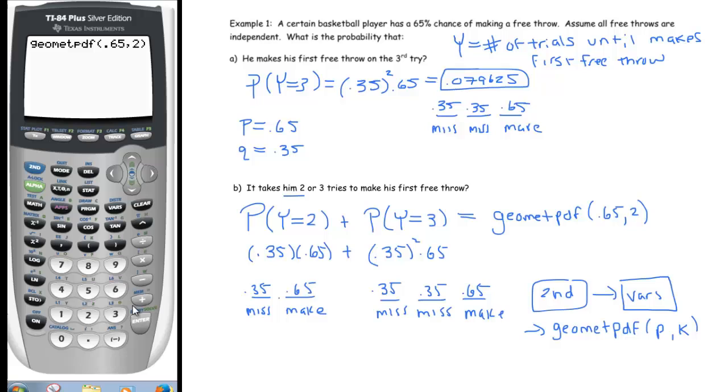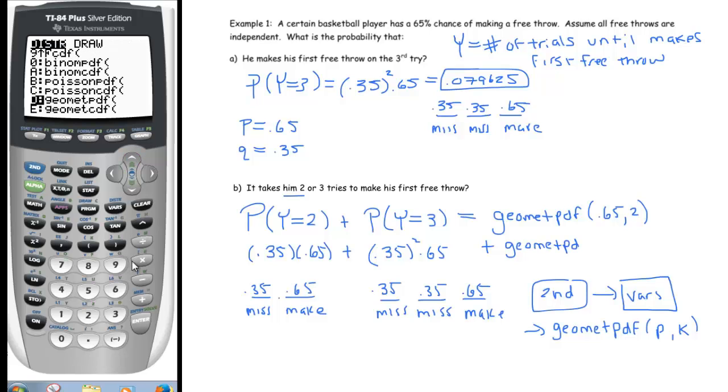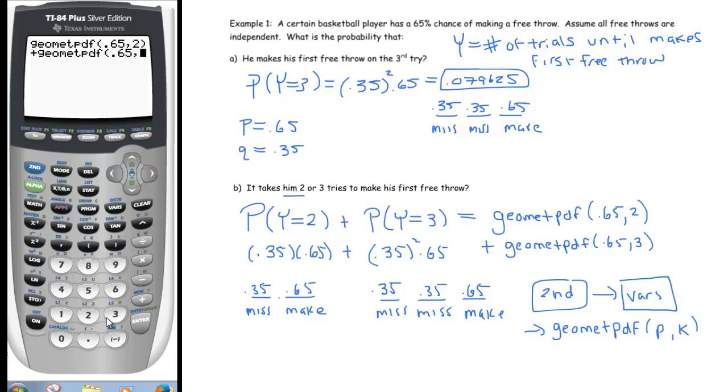For our first one we want to see the probability for a success to happen at the second free throw, and then we would add that to the probability of it taking three.